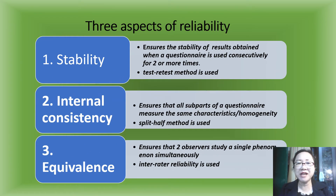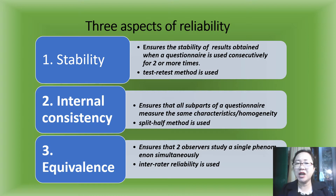There are three aspects of reliability. One is stability. It ensures the stability of results obtained when a questionnaire is used consecutively for two or more times, and a test-retest method is used.